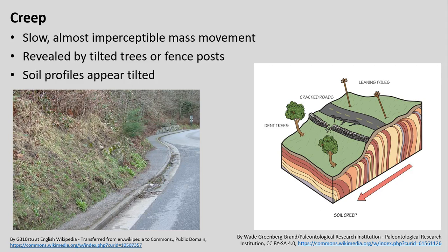We're going to start a lot slower than landslides and talk about creep. As its name implies, it is quite slow — an almost imperceptible mass movement occurring over a very long time scale: years, tens of years, hundreds of years at the minimum. We can actually go out and perceptively observe this on the landscape through things like tilted trees, tilted fence posts, cracked roads, and leaning poles. On the left-hand side, there's an example of material creeping very slowly over many years onto a sidewalk — very imperceptible if you're not looking for it, but observable with a keen eye.